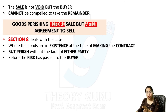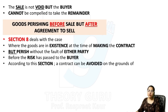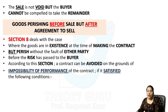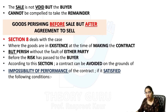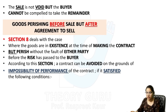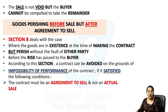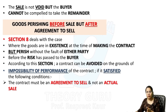According to Section 8, a contract can be avoided on the grounds of impossibility of performance, if it satisfies the following conditions. पहली: the contract must be an agreement to sell and not an actual sale — अभी sale नहीं हुई, सिर्फ agreement to sell हुआ था। दूसरी: the loss must be specific and should relate to specific goods।